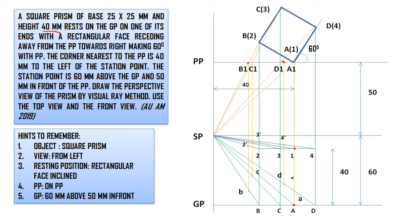Label the points A, B, C and D at the top, with 2 dash, 3 dash, 4 dash, and 1 dash. Here we have 1, 2, 3 — mark them correctly. B to A is joined, B2 is joined, A1 dash is joined — that is the visible value of the perspective.